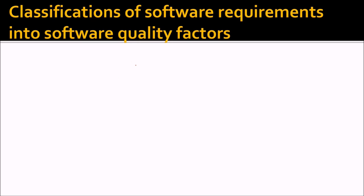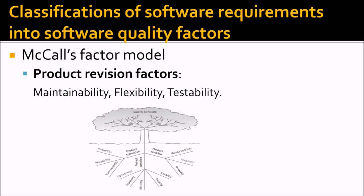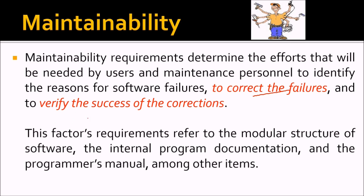Now we look at the product revision factors: maintainability, flexibility, and testability. Maintainability requirements determine the efforts needed by users and maintenance personnel to identify the reasons for software failures, to correct those failures, and to verify the success of corrections. These requirements refer to the modular structure of the software, internal product documentation, and the programmer manual.